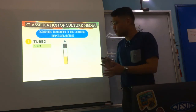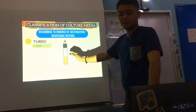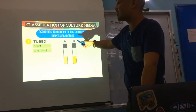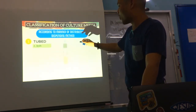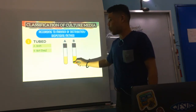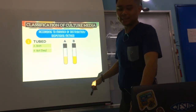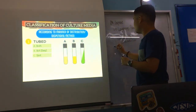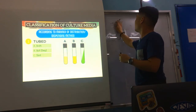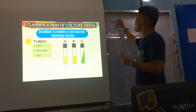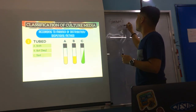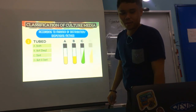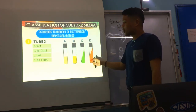Next is manner of distribution. We have tubed media — placed in tubes, usually screw cap tubes or cotton plug tubes. Types of tubed media include broth, butt or deep (example: SIM butt), slant (example: Simmons citrate), and butt-and-slant combined (example: TSI, triple sugar iron).